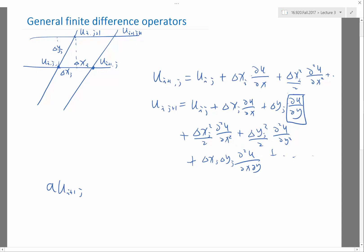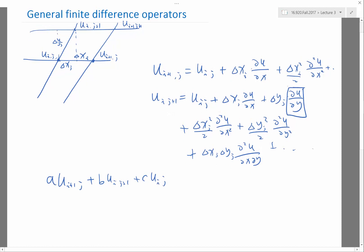So I want to approximate this particular derivative by A times U I J, which is unknown, plus B times U I J plus one, plus C times U I J. And in order for me to approximate this derivative, I want the difference between the finite difference operator and partial U partial Y to be as small as possible.